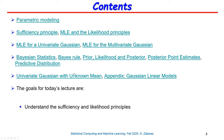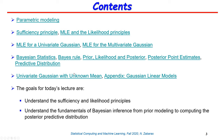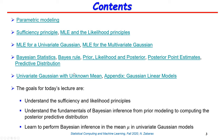The goals for today's lecture include understanding the sufficiency and likelihood principles, understanding the fundamentals of Bayesian inference — things such as the prior, the likelihood, the posterior, and the predictive distribution — and learning how to perform inference in the simple case of the univariate Gaussian model, in particular doing inference for the mean mu of the univariate Gaussian.